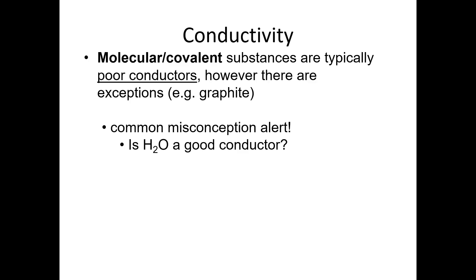A lot of people think that water is a good conductor, but it's actually not. The reason why people get out of pools during a lightning storm is not because of the water itself, but because of all the ionic substances dissolved in the water. Ionic substances dissolved in water create electrolytes, which allow electricity to flow. The salts added to pools — like hypochlorite salts — allow the water to conduct electricity. If you take distilled pure water and test its conductivity, it would be extremely low.